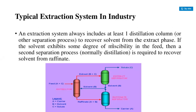A typical industrial extraction system always includes at least one distillation column to recover solvent from the extract phase. If the solvent exhibits some degree of miscibility in the feed, then a second separation process is required to recover solvent from the raffinate.